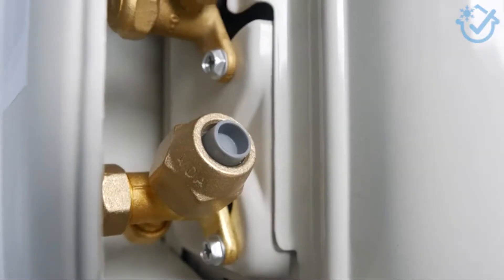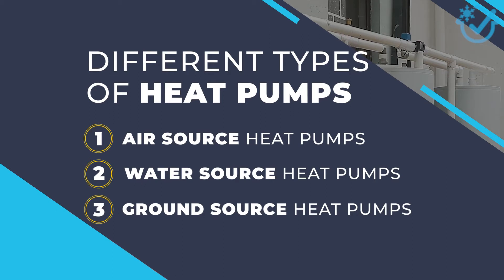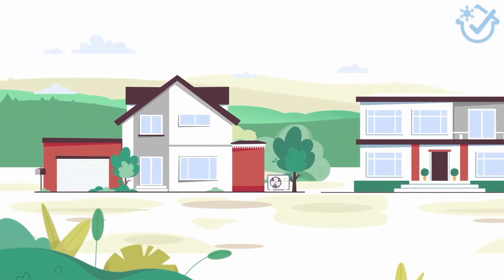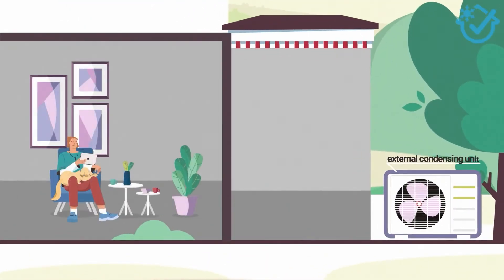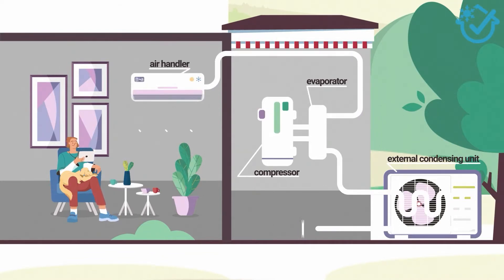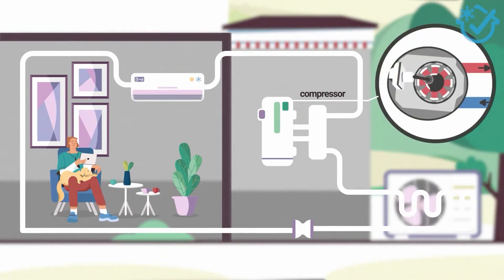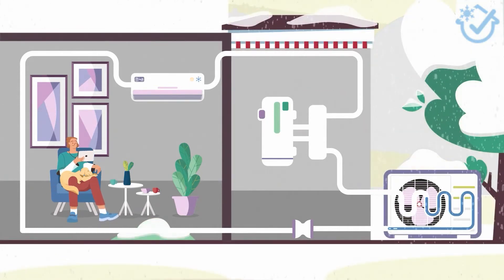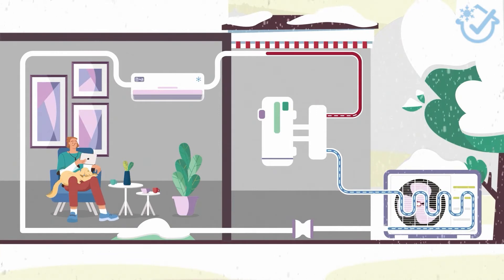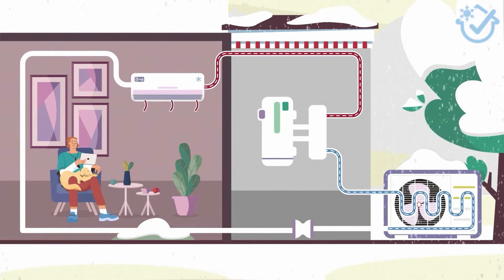Now let's take a minute to learn about the different types of heat pumps. We'll discuss air, water, and ground source systems. Air source heat pumps are the most common type found in homes. They consist of an external condensing unit and pump with an interior evaporator and air handler. They work in a similar way to a mini-split AC system. The compressor pressurizes the refrigerant, which is passed through the evaporator where the air is heated or cooled. During the heating process, the valve reverses and the warmth is moved to the evaporator where it heats the air. It works as a heat exchanger between the outside air and the refrigerant.